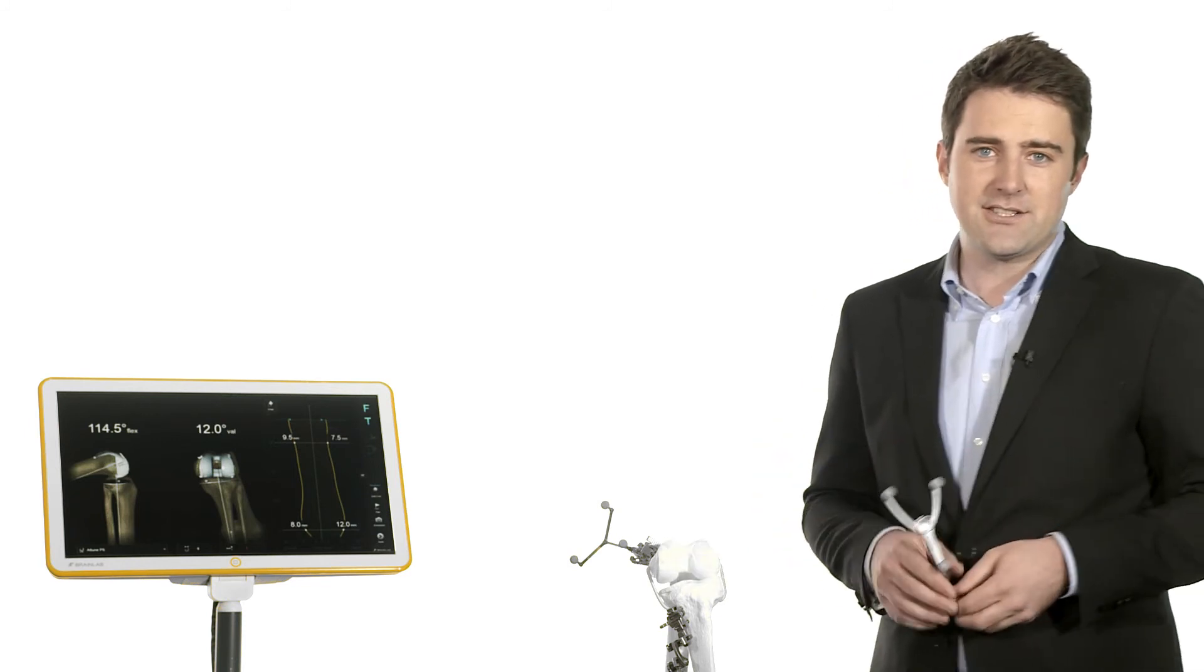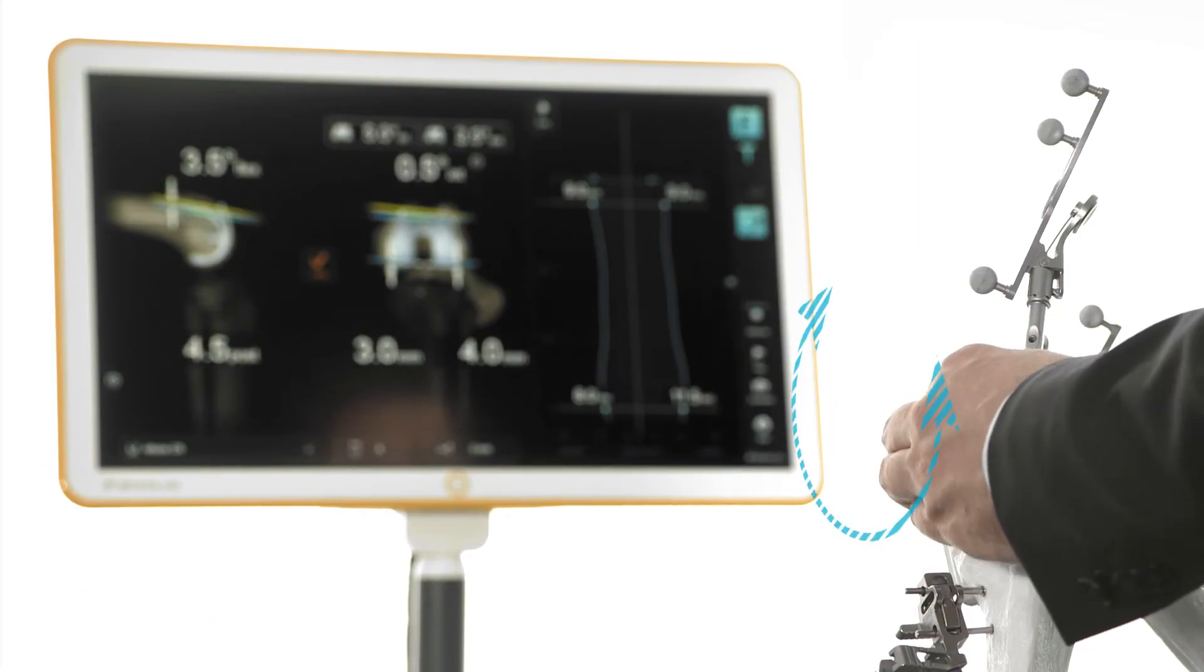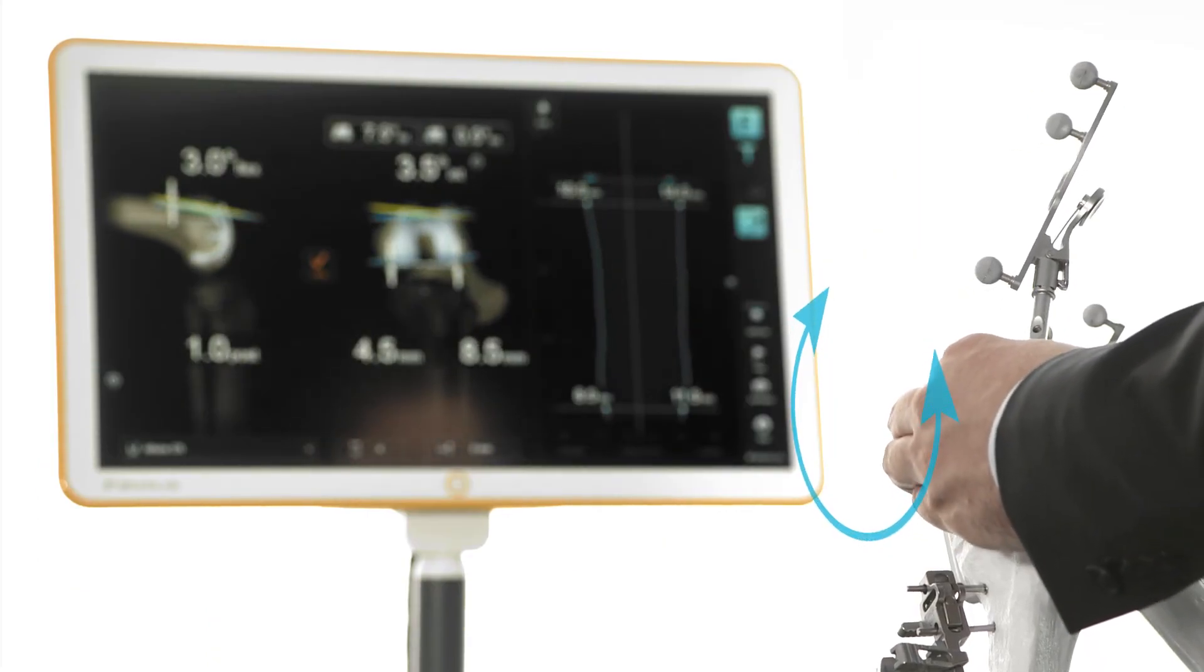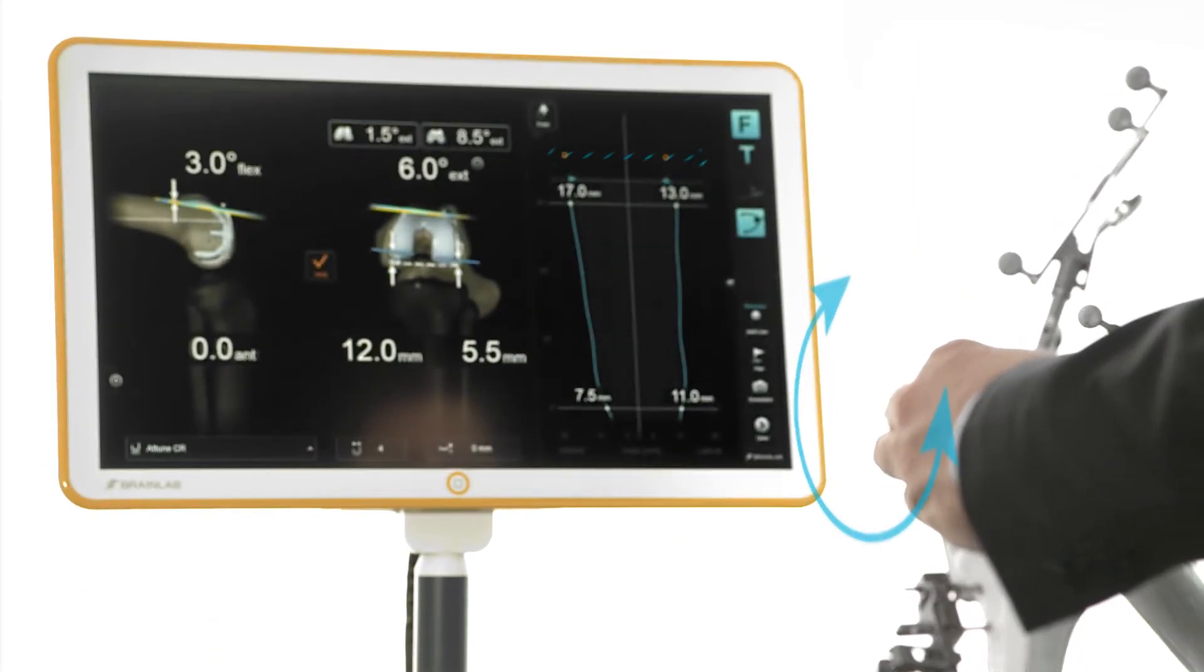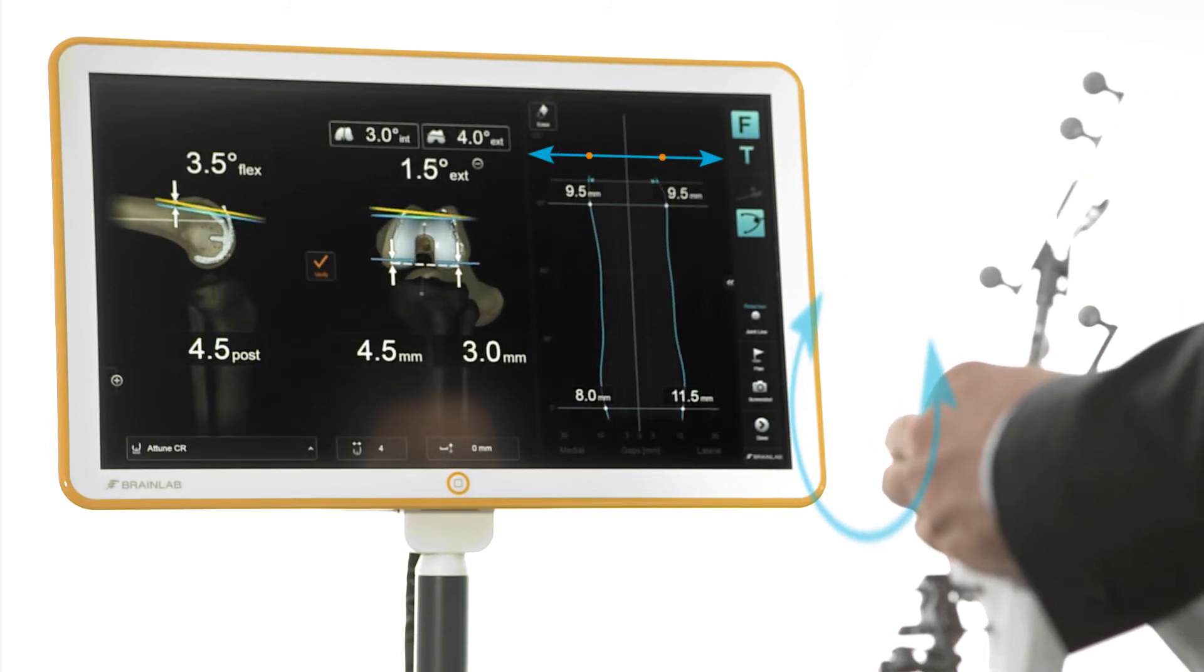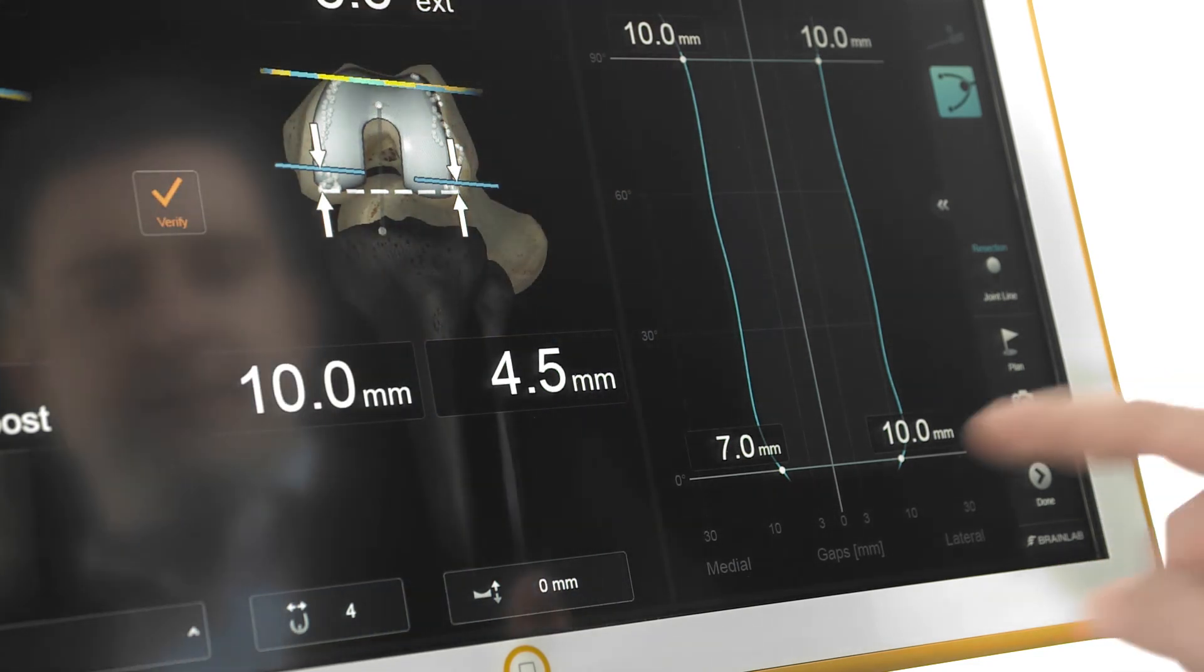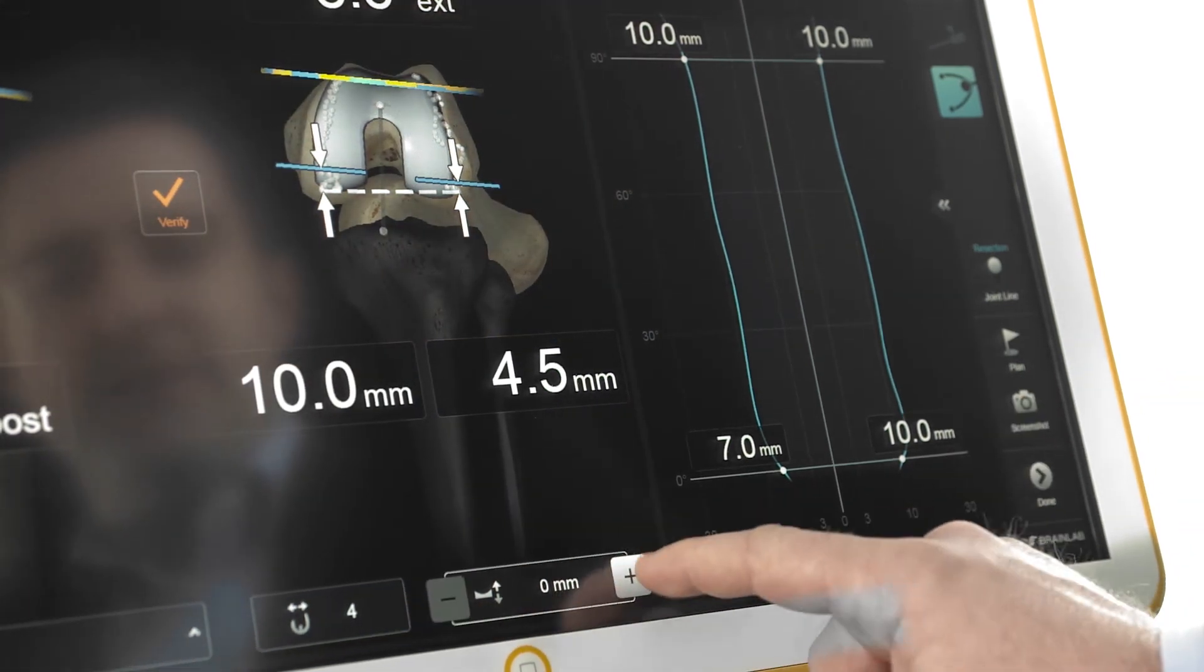Surgical interactions such as soft tissue releases are immediately taken into account. Finally, when performing the anterior cut, the software shows how rotation of the cutting block will affect final stability. The goal is to achieve two parallel lines indicating symmetrical stability of the joint. By selecting the insert thickness, the graph drifts to the zero line.